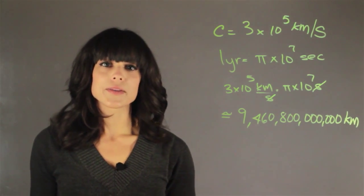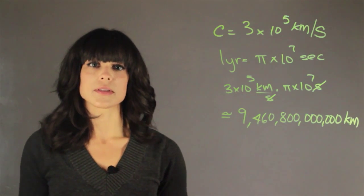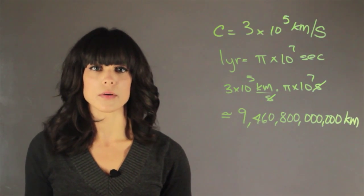So it's about 9 trillion kilometers, which is about 6 trillion miles. That means that light in one year will travel this many kilometers.